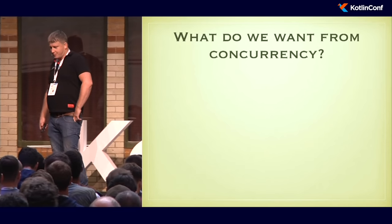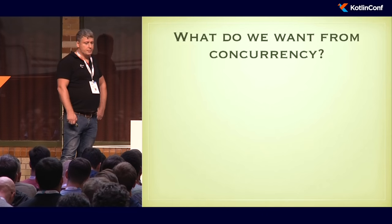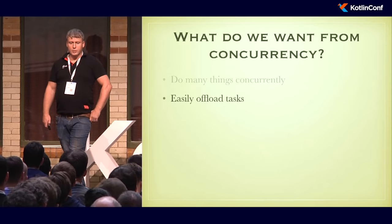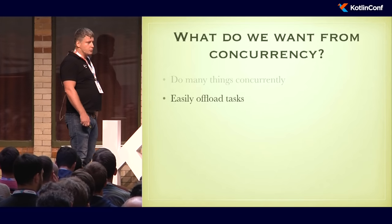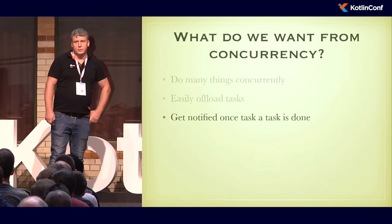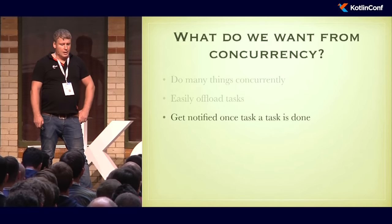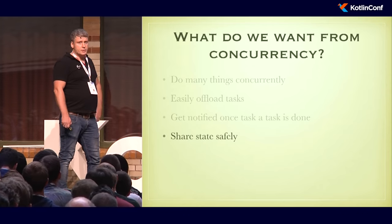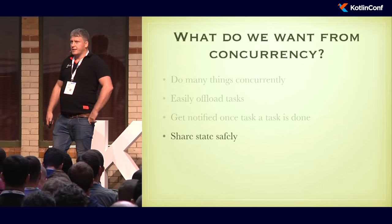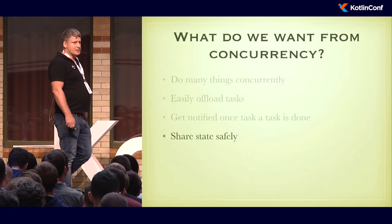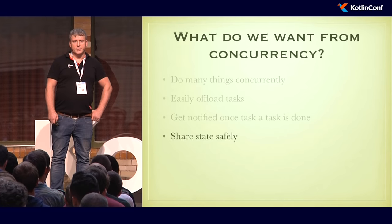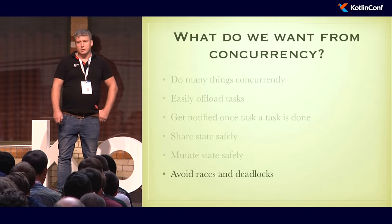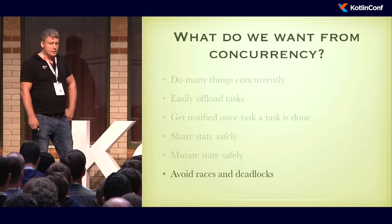Let's start from the ground up. What do we actually want from concurrency? It's pretty simple — we just do many things concurrently. We want to offload tasks to many computational devices, like modern multi-core CPUs. Once a scheduled task finishes, we want to get notified. We want to share state safely, ensuring multiple concurrent executors don't mutate it unexpectedly. And we want to avoid typical concurrent programming mistakes such as race conditions and deadlocks.